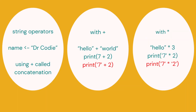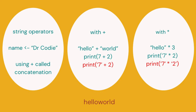We've seen we have strings and numbers. With a string like 'Dr. Cody', we can use the plus symbol to join two strings together. The word 'add' is not used — the correct word is concatenation. For example, 'hello' plus 'world' would put them together as one string: 'helloworld'.